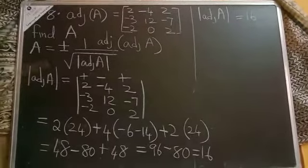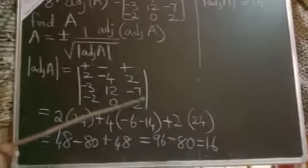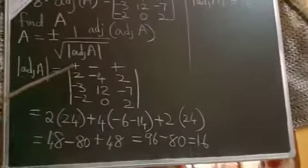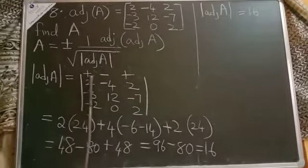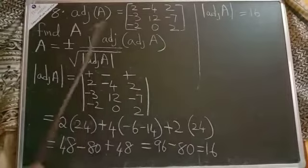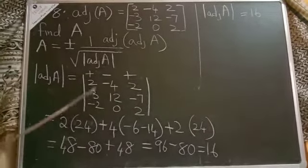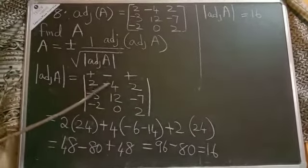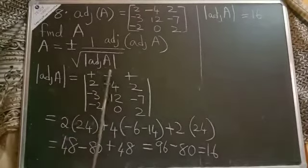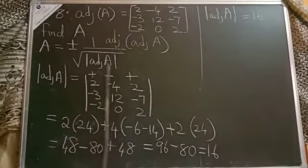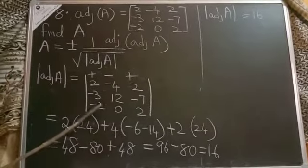First, find the determinant of adjoint A. As usual, to find the determinant, apply plus, minus, plus. First number is 2 — cover that particular column and row: 12 minus 24. Next, minus into minus gives plus 4 — cover that particular column and row: minus 3 into 2 gives minus 6.